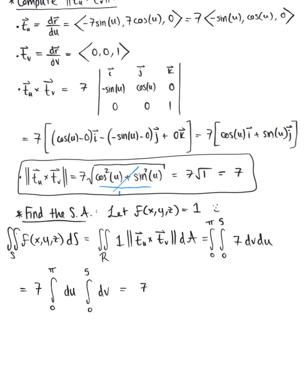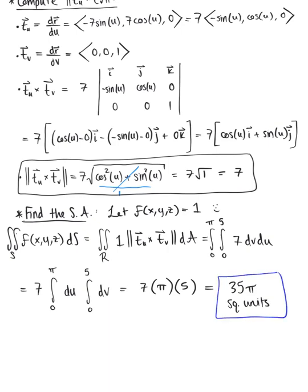This leaves us with 7 multiplied by π multiplied by 5, for a beautiful final answer of 35π square units. This is the surface area of the half cylinder.